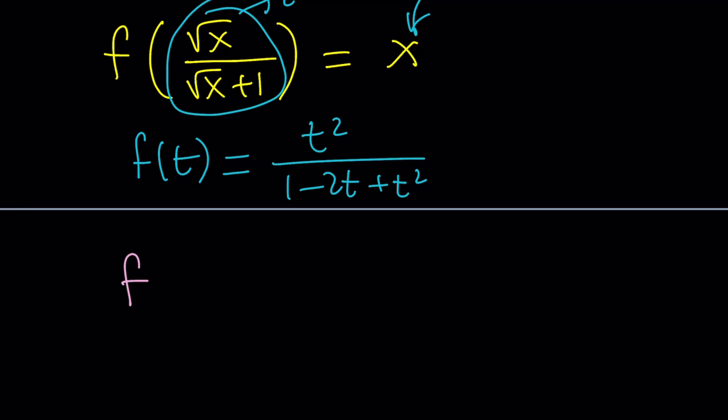We can use pretty much any variable. We can replace t with z, z with t, z with 2t, whatever you want. So f of x from here is going to be x squared divided by x squared minus 2x plus 1 and this should be the answer.